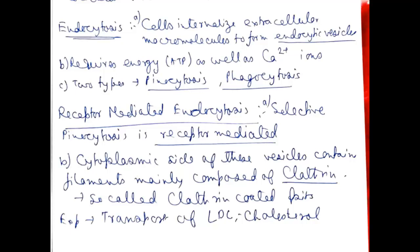Next is endocytosis. Cells internalize extracellular macromolecules to form endocytic vesicles. It requires energy in the form of ATP as well as calcium ions. It is of two types: pinocytosis and phagocytosis. Pinocytosis literally means drinking by the cells — cells take up fluid by this method. Fluid-phase pinocytosis is a non-selective process. Selective pinocytosis is receptor-mediated. The cytoplasmic side of these vesicles contains filaments mainly composed of clathrin protein, so called clathrin-coated pits. An example is the transport of LDL and cholesterol.